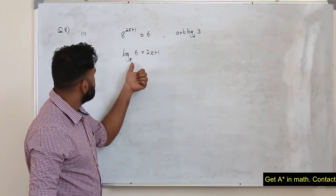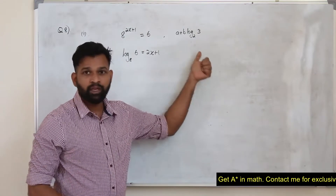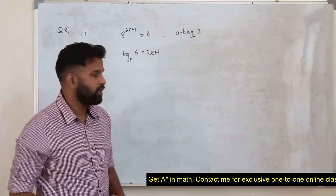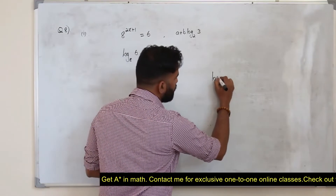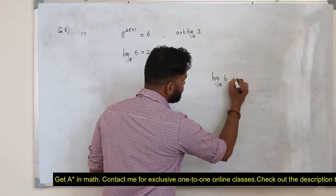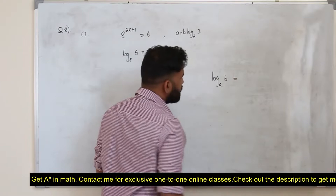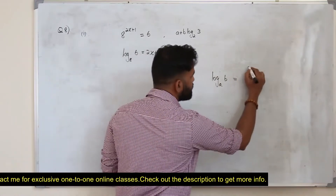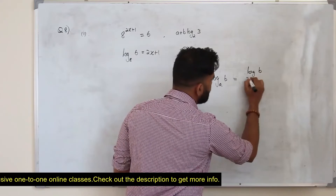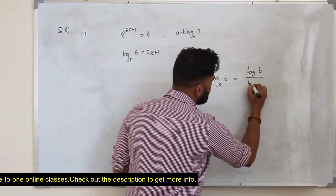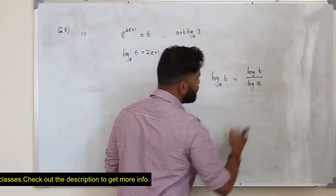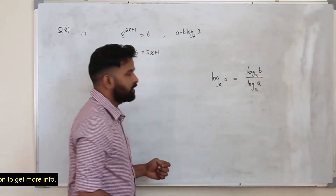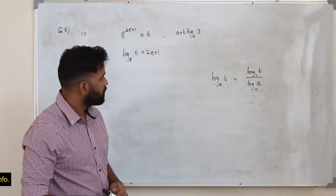But we don't want base 8, we want base 2. You need to know how to change the base of the logarithm. So if you have log B to the base 8 and you need to change the base to something else, you can write it as log B divided by log 8, and you can put any base there. That's how we change the base of the log.